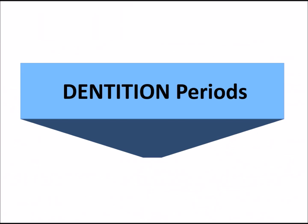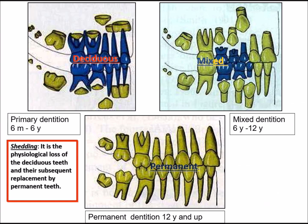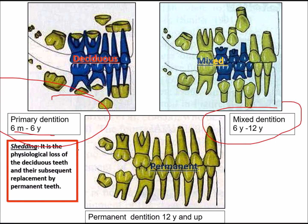The dentition periods are: primary dentition from 6 months to 6 years, mixed dentition from 6 years to 12 years, and permanent dentition from 12 years onward. Shedding is the physiological loss of deciduous teeth and their subsequent replacement by permanent teeth.